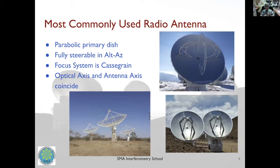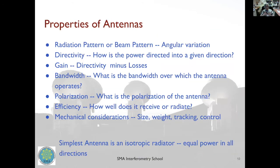The most commonly used radio antenna is a fully steerable parabolic primary dish on an altitude-azimuth mount with a Cassegrain focus system. For example, ALMA and GMRT both use this. The advantage of this system is that the optical axis and the antenna axis coincide, making it a very symmetric system with many practical advantages.